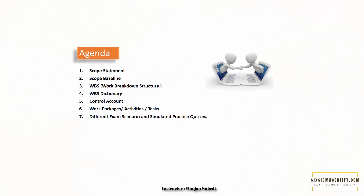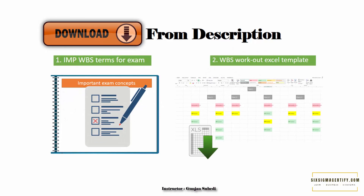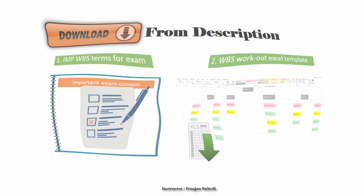In summary, we learned about scope statement, scope baseline, WBS, WBS dictionary, and different associated terms such as control account, work packages, activities, and tasks. Breaking down work packages gives us activities, and breaking down activities gives us tasks. We also practiced different simulated quizzes. You can download the important topics in WBS and scope management and an Excel template for making a work breakdown structure through the link in the description. Thank you for being with me in this lecture.